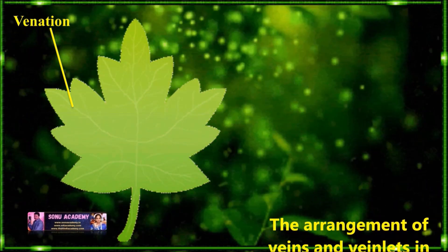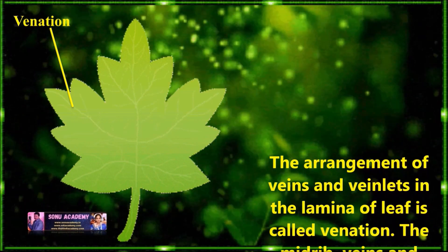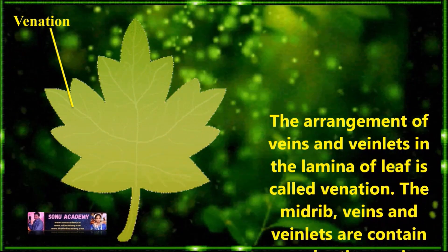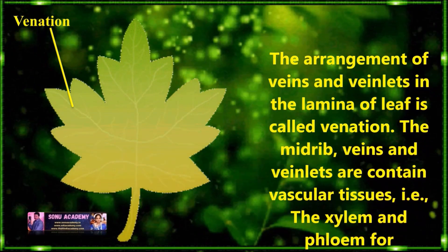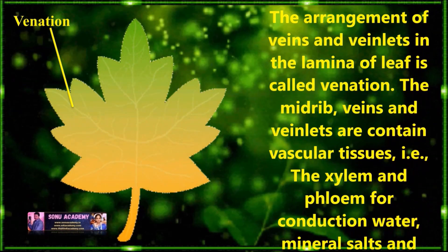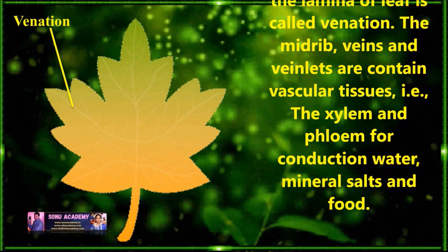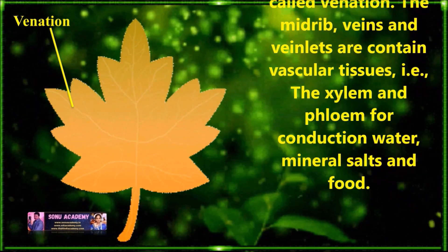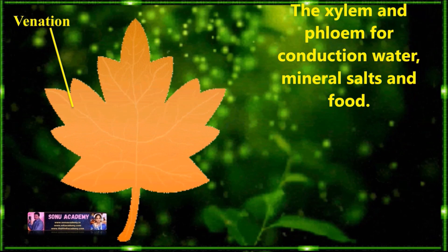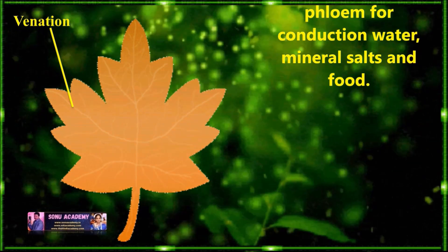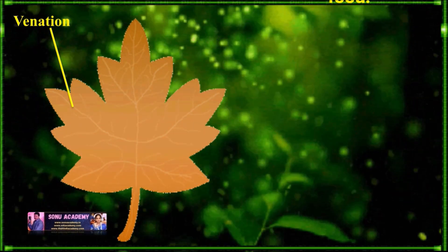Let us discuss about venation. The arrangement of veins and veinlets in a lamina of a leaf is called venation. The midrib, veins and veinlets contain vascular tissue — that is, xylem and phloem — for conducting water, minerals, salts and food. Leaves mainly have two types of venation: one is reticulate venation and the second one is parallel venation.